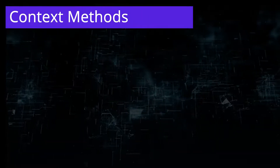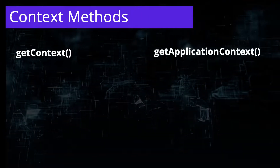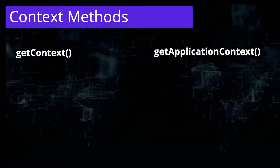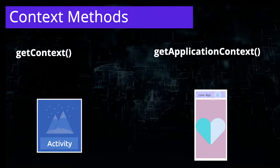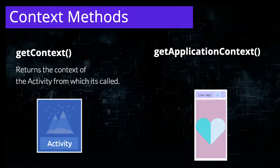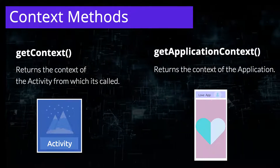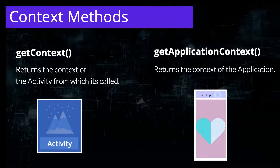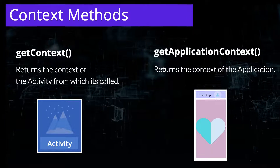First, let's look at the two most used functions for retrieving the context. We use the getContext method, which returns the context linked to the activity from which it is called. Then there is getApplicationContext, which returns the context linked to the application that holds all the activities running inside it.